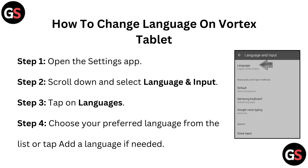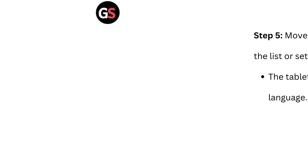Step 3: Tap on languages. Step 4: Choose your preferred language from the list, or tap add a language if needed.